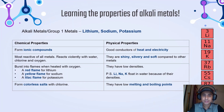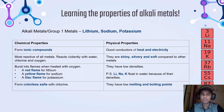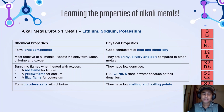Now let us learn more and in detail about the alkali metals, or the elements of group 1. The metals of group 1 we are going to study are lithium, sodium, and potassium. They are the most reactive of all metals. They react violently with water, chlorine, and oxygen. With oxygen and chlorine, they burst into flames. When heated with oxygen, lithium gives off a red flame, sodium gives off a yellow flame, while potassium gives off a lilac flame. They form colorless salts with chlorine, and since they are metals, when they react with nonmetals, they form ionic compounds.